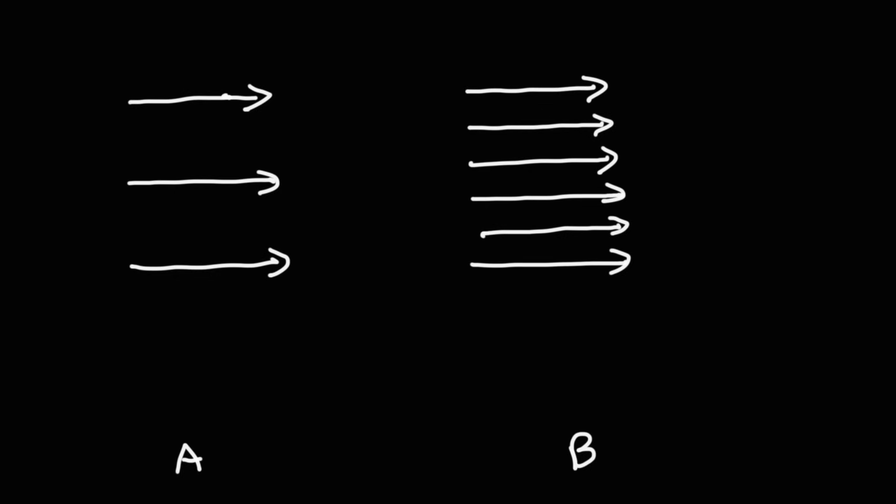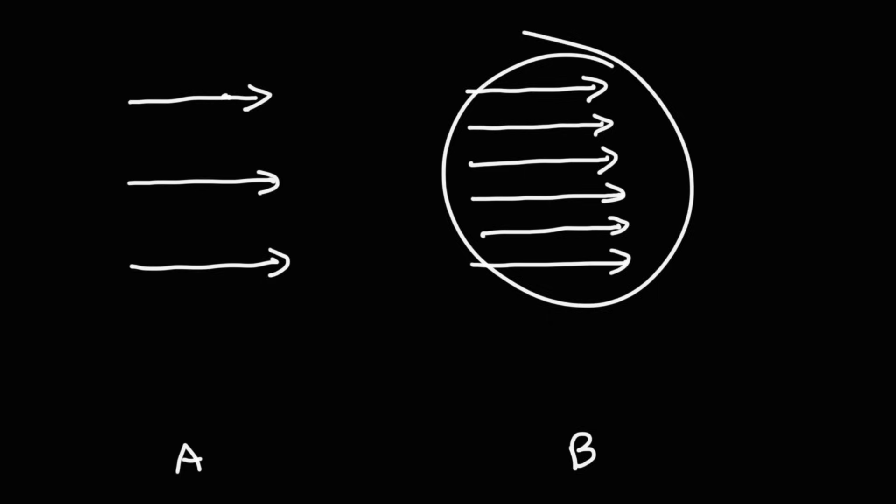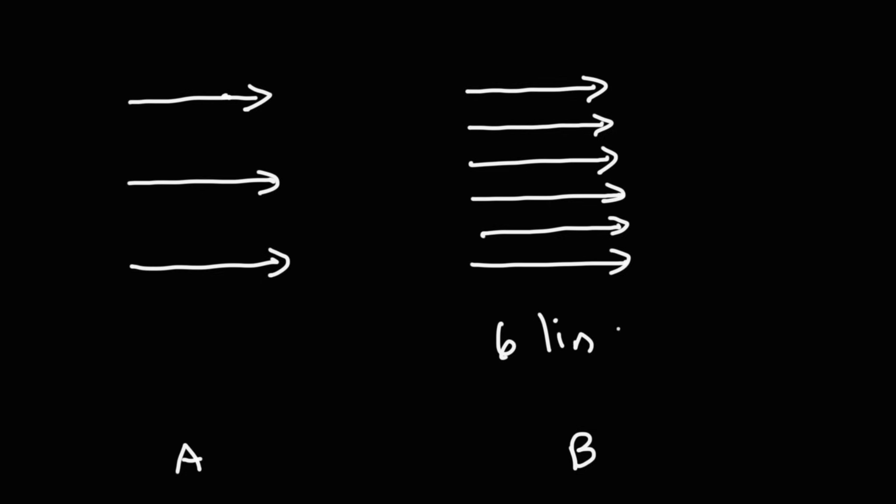The next thing to understand is the density of electric field lines and what that tells you. Consider two situations: on the left we have two electric field lines, and on the right we have six electric field lines in the same region of space. The electric field is stronger in region B because the density of field lines is greater — more lines in a given region means a stronger electric field.